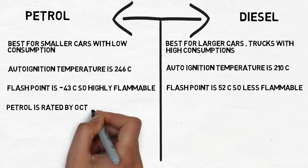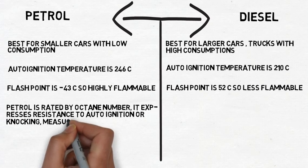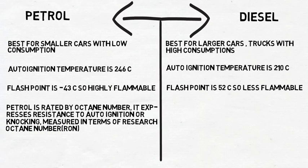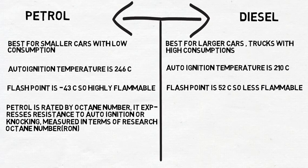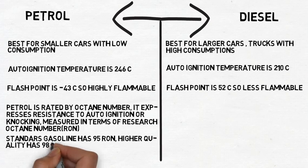Petrol is rated by octane number, which expresses resistance to auto ignition or knocking, measured in terms of research octane number (RON). In a petrol engine, knocking — the auto ignition of petrol without a spark from the spark plug — is the main problem and can damage the engine. Standard gasoline has RON 95, higher quality has RON 98, and much higher quality has RON 102.